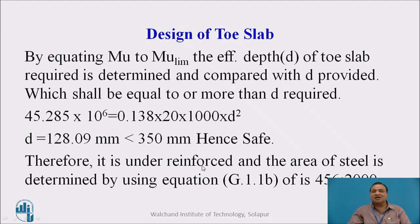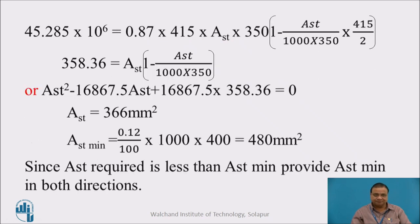Therefore, it is an under reinforced section, and area of steel is determined by using equation 1.1B of IS456-2000. Using MU equals 0.87 Fy AST D into 1 minus AST Fy upon FCK BD, we calculate AST, which is 366 mm square.